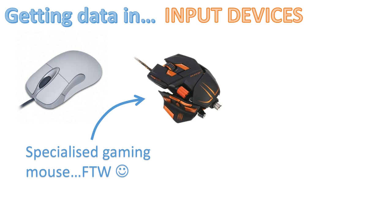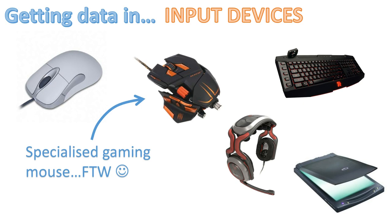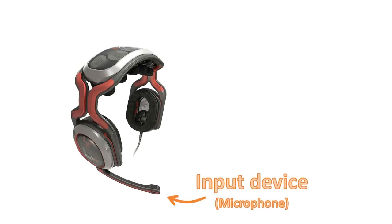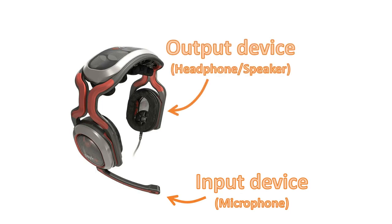There are other input devices too: we've got the keyboard, a scanner, and a microphone. This headset is kind of a hybrid — the microphone is the input device, but we also have output devices on here, including the headphones, sometimes called speakers. Some headsets also include vibration control, so if you get shot the headset vibrates. So that's both an input and an output device.